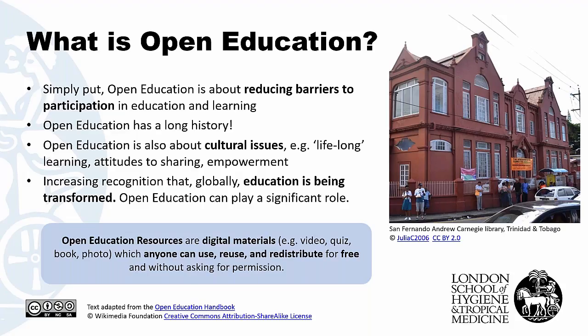With rising access to digital technologies and the internet, the focus of a lot of open education activity has moved to online and digital. That's what we're looking at today in terms of impact: open online courses such as the ones we're developing at ICH, and open educational resources, which Rob is going to talk about. These can be defined as digital materials which anyone can download, use, change, and then share again for free, without asking for permission from whoever originally published the material. This is done through a special copyright license, often Creative Commons, which is the most popular one and the one we use. Open education can play a significant role in shaping how we address the issues facing education globally today.